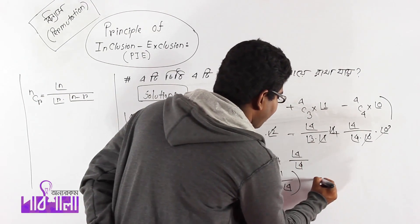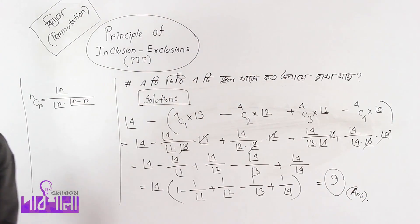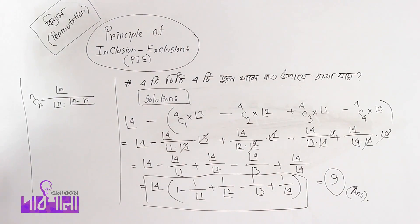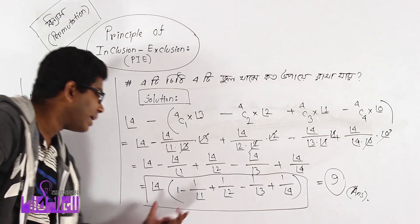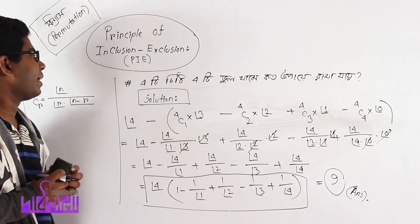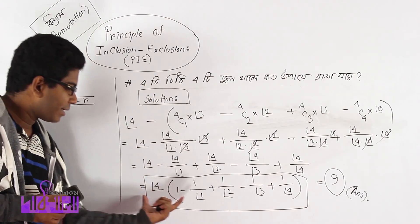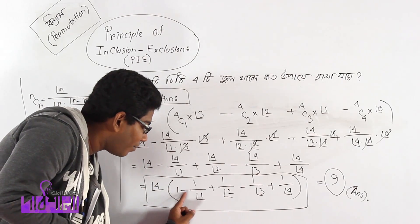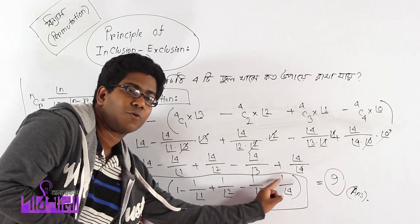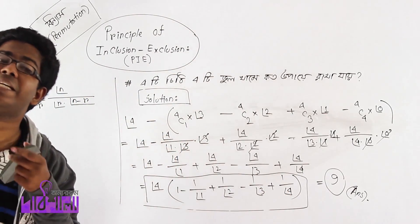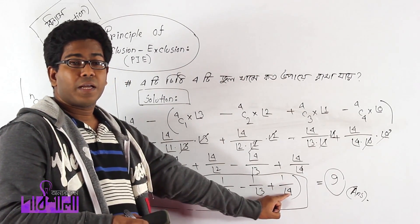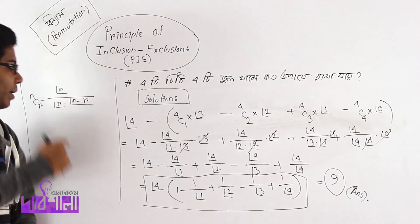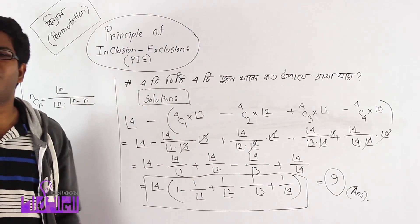Taking factorial 4 common, we get: 1 minus 1 by factorial 1, plus 1 by factorial 2, minus 1 by factorial 3, plus 1 by factorial 4. Calculate all these values and you get the answer. The answer is factorial 4 multiplied by this expression. From this line, whatever problem comes, we can solve it.